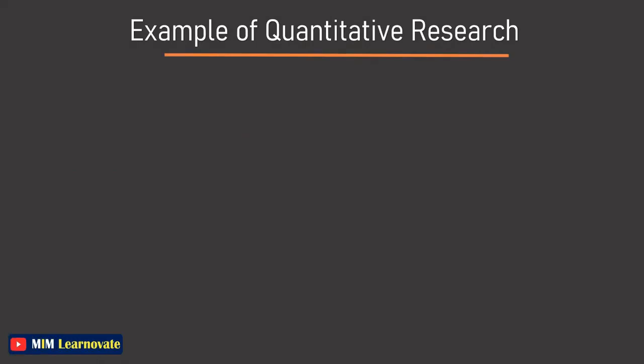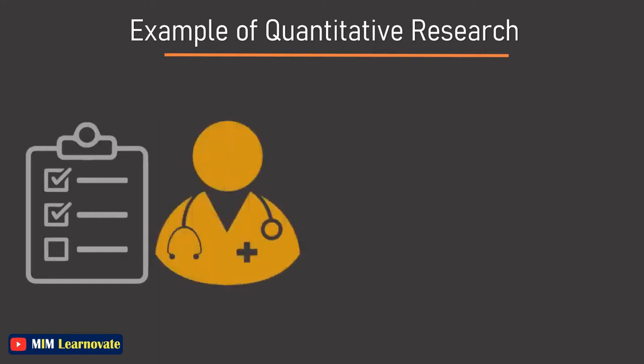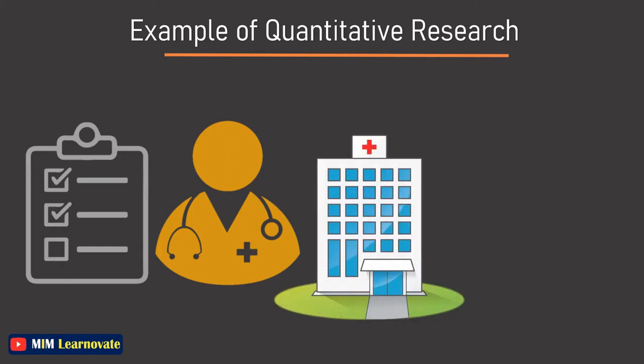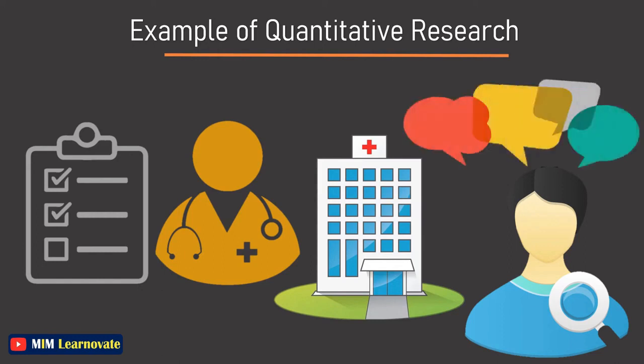An example of quantitative research is the survey conducted to understand the amount of time a doctor takes to tend to a patient when the patient walks into the hospital. A patient satisfaction survey template can be administered to ask questions like how much time did a doctor take to see a patient, how often does a patient walk into a hospital, and other such questions.